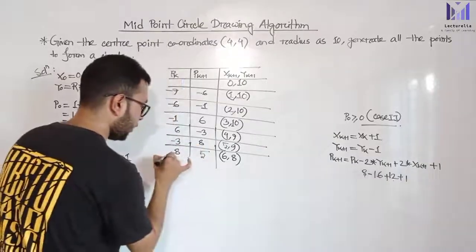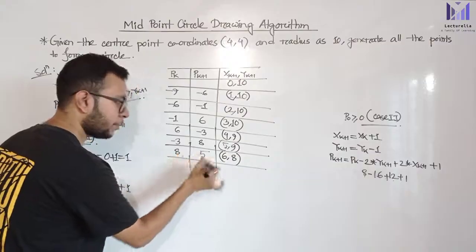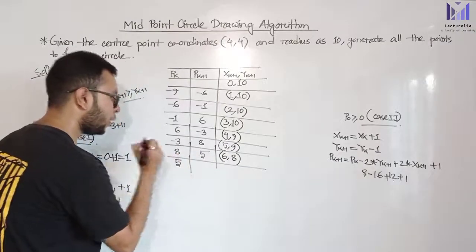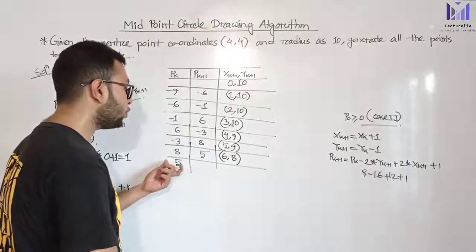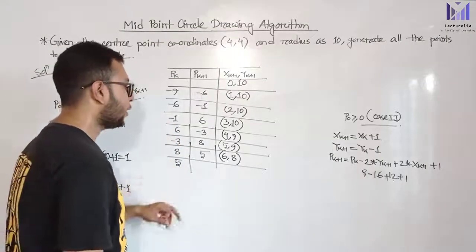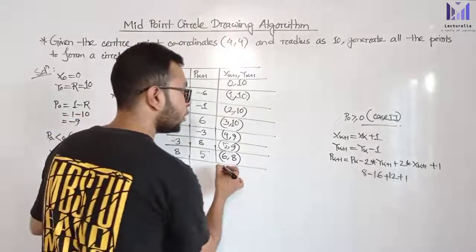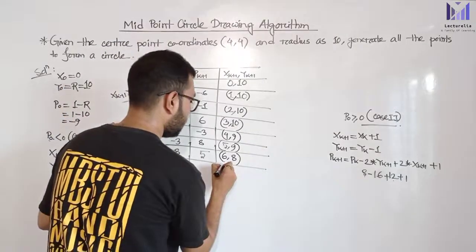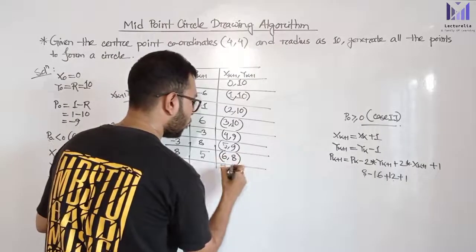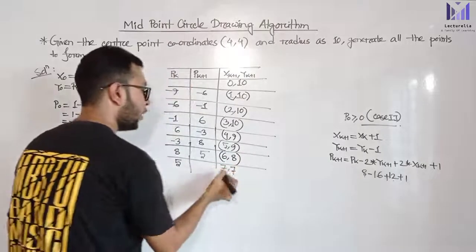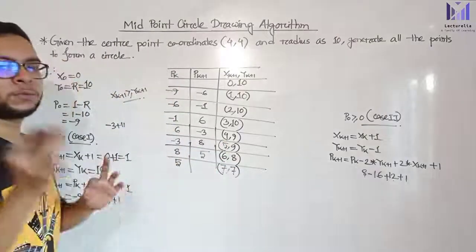Next line: position parameter satisfies case 2. We check the next point. x value is incremented to 7 and y value is decremented to 7. Now we have x equal to 7 and y equal to 7.